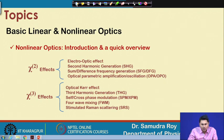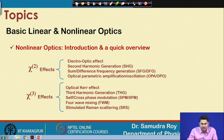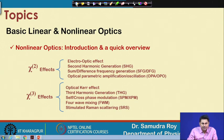In chi-2 effect, we have four different phenomena we will discuss in detail: electro-optic effect, second harmonic generation, sum and difference frequency generation, and optical parametric amplification (OPA) or optical parametric oscillation (OPO). In chi-3 effects, we have the optical Kerr effect, third harmonic generation, self and cross phase modulation (SPM and XPM), four-wave mixing, and stimulated Raman scattering.